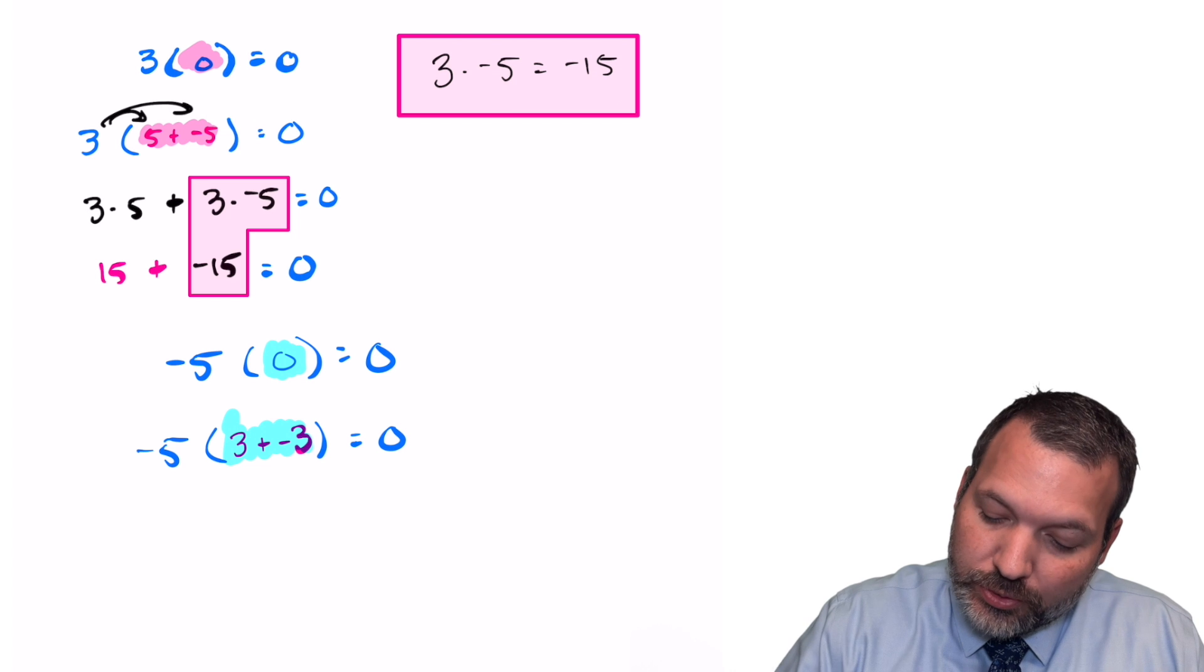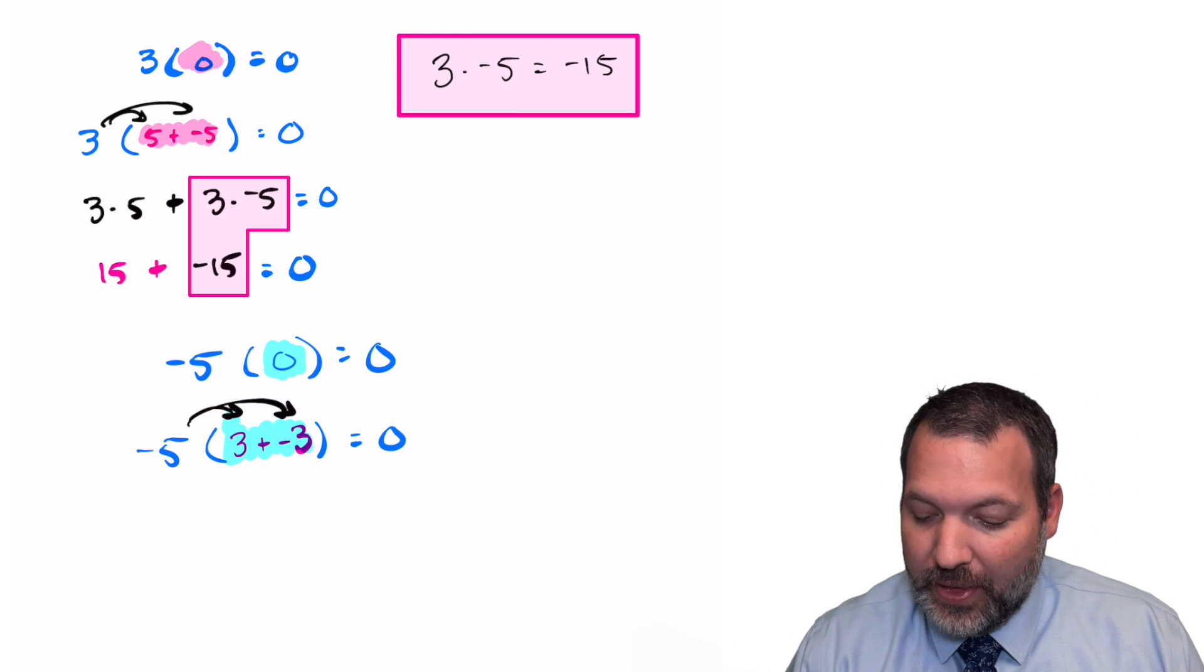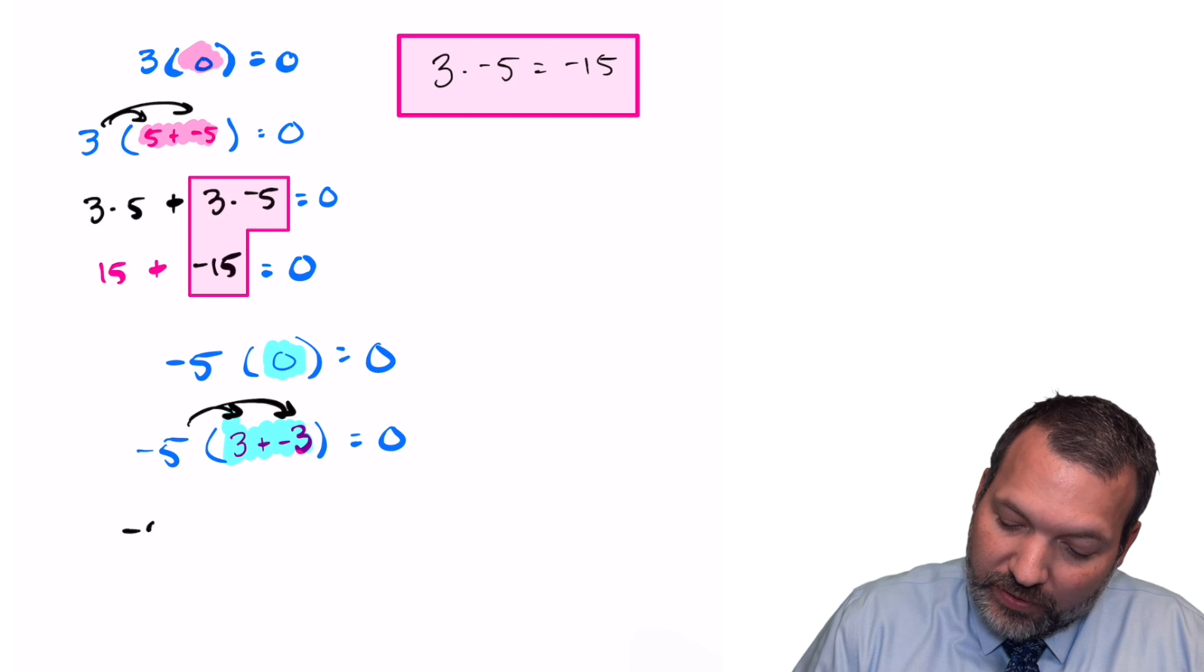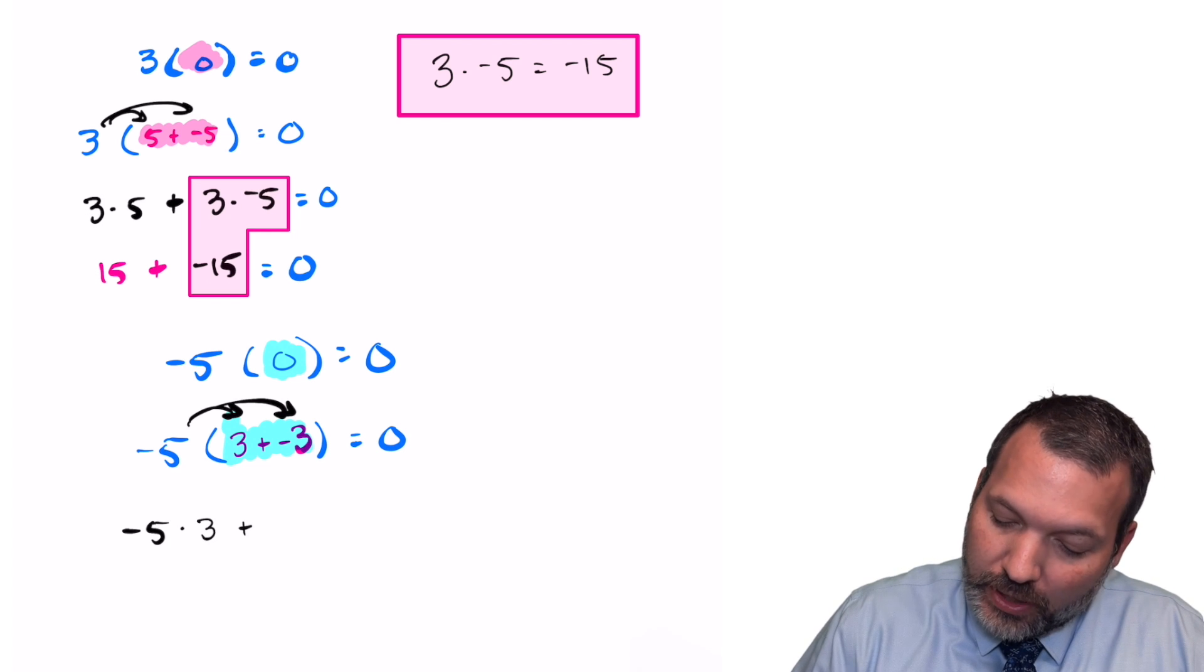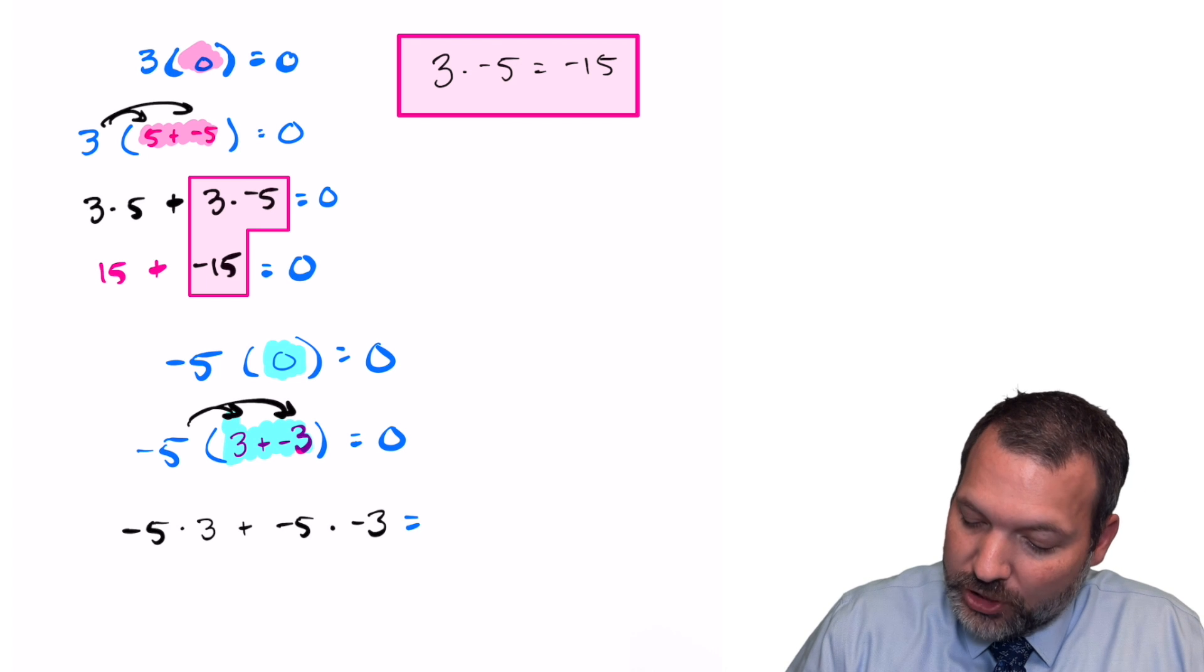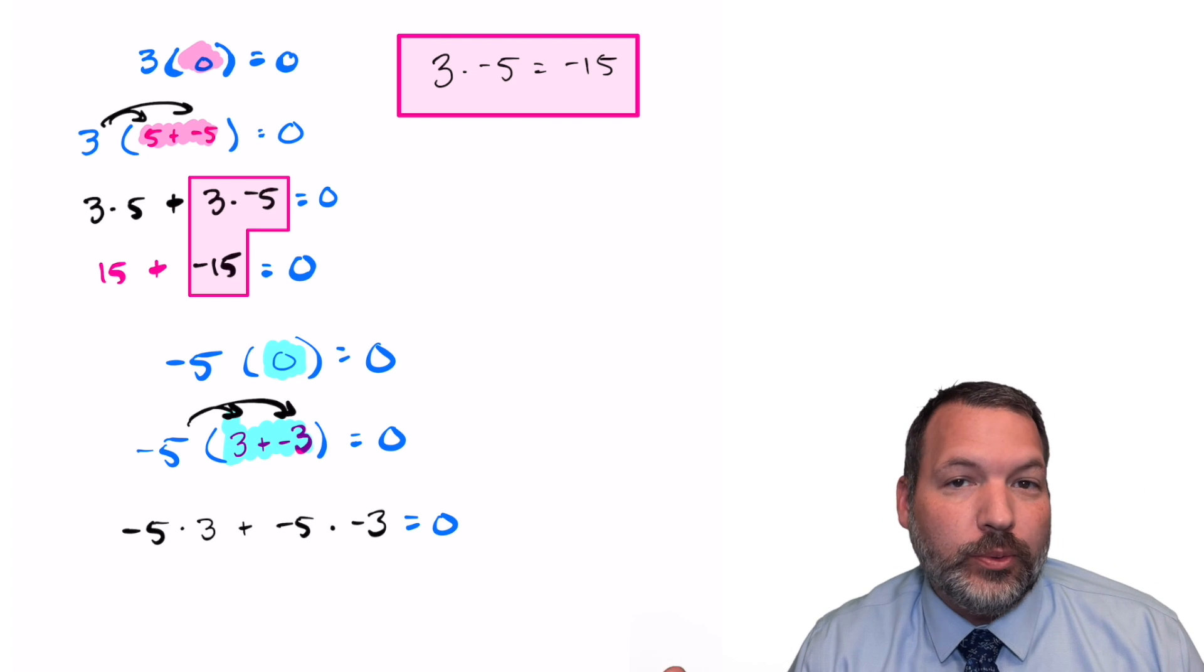Once again, we're going to use the distributive property and multiply that negative five onto the inside of those parentheses. So that's going to give us negative five times three plus negative five times negative three. And again, since we haven't really changed anything, that whole thing should be equal to zero.